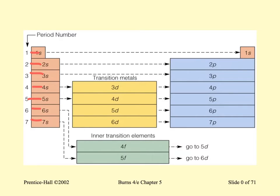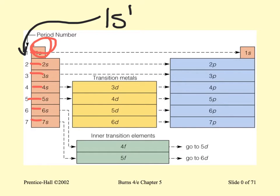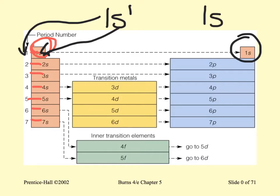For example, hydrogen — you know hydrogen is placed here. Hydrogen has an electron configuration of 1S1. The '1' comes from the period number, 'S' because this is the S block, and '1' because it has one electron. What about helium? The electron configuration of helium is 1S2. Again, '1' comes from the period, 'S' from the S block, and '2' because it has two electrons.